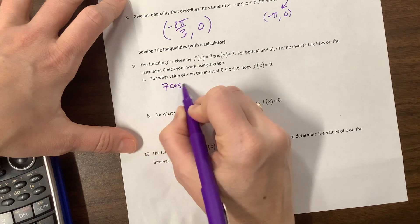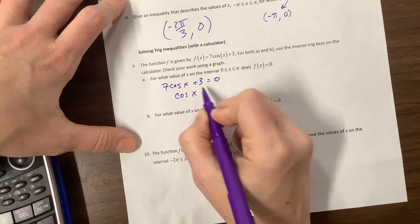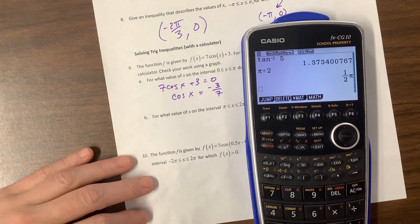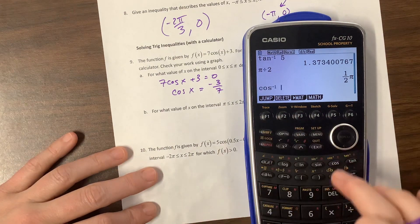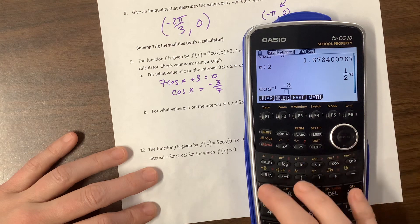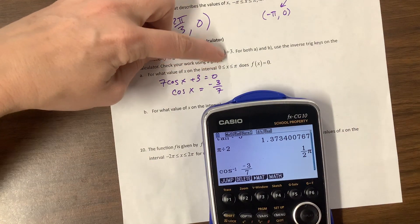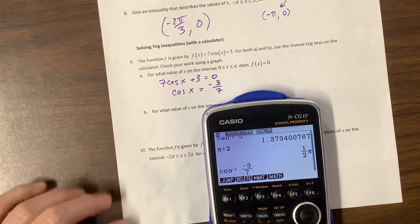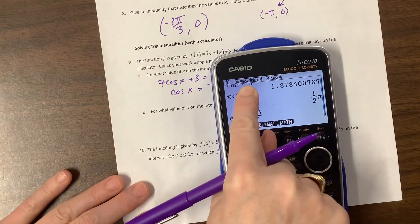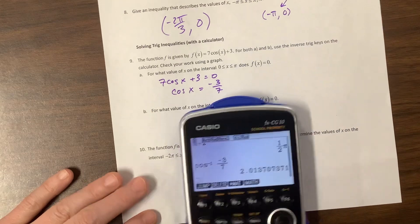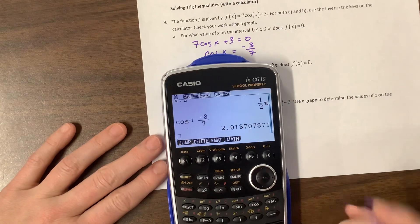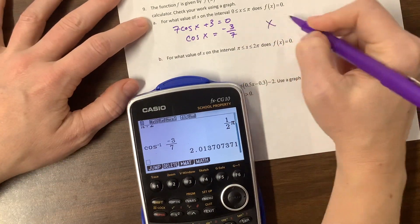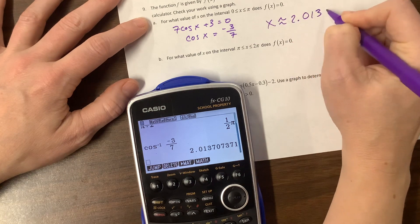So they're saying, where does it equal 0? So 7 cosine of x plus 3 equals 0, means that cosine of x needs equal negative 3 sevenths. So we come over here, and we do inverse cosine of negative 3 sevenths. And notice, they're telling me in terms of radians, they're telling me by using pi. My calculator is in radians, I can see it right there. And when I hit enter, I get this value. And that does live between 0 and pi, pi is 3.14-ish. So x is approximately 2.137.